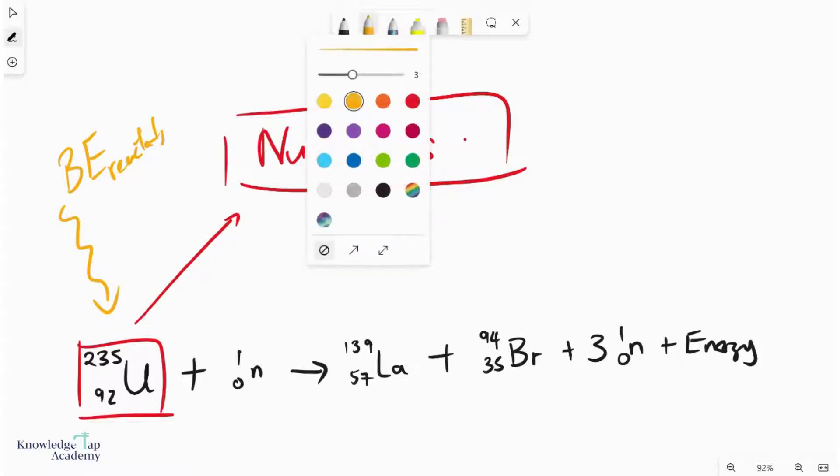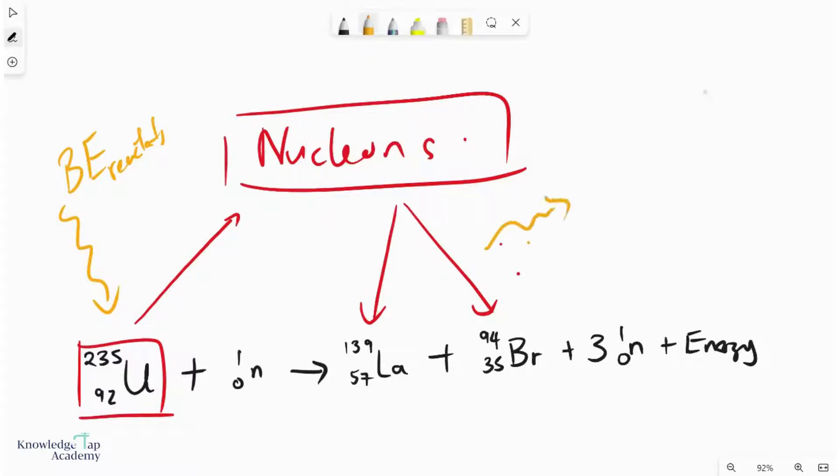Now, what's going to happen is these nucleons will then be able to form the products. And when you form these products, you release the binding energy of lanthanum and bromine. And so that will be the BE of the products.